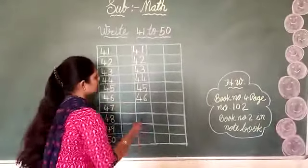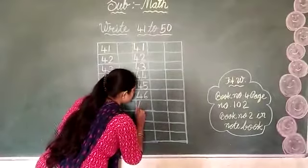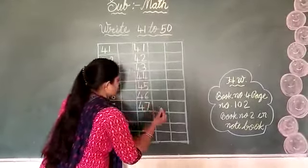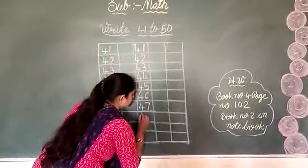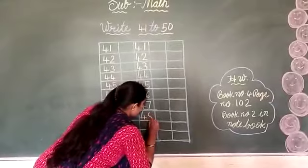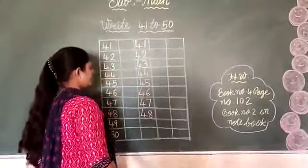After that comes 4, 7, 47. Write 4, 7, 47. Next, 4, 8, 48. Write 4, 8, 48.